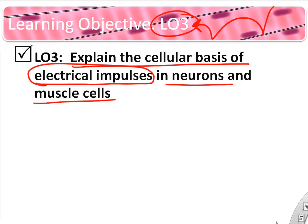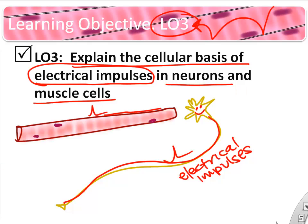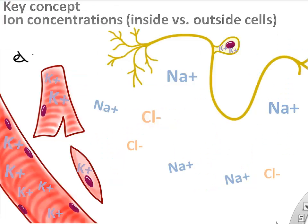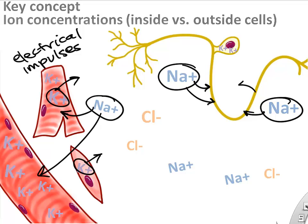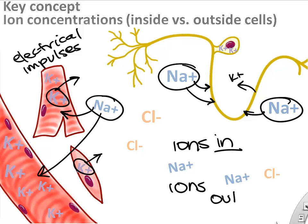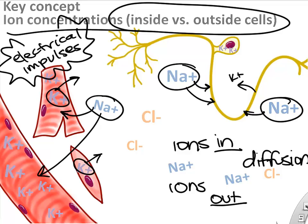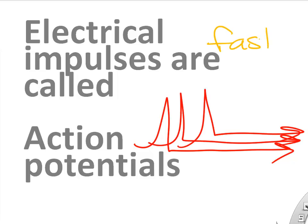Next, we're going to cover the cellular basis of electrical impulses in neurons and muscle cells. Those electrical impulses are important both for the neuron to tell our muscle cell to contract, and for the muscle cell to actually contract. Broken down to their simplest form, electrical impulses are really just charged ions moving into or out of cells — sometimes sodium rushes in, sometimes potassium rushes out — and that changes the charge inside the cell. We call these action potentials.